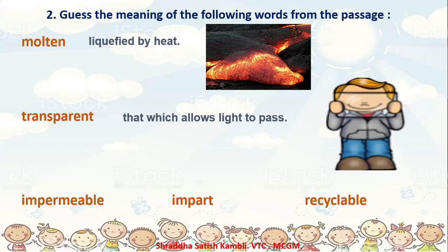So how will you find out the meaning of the other words? Pick up a dictionary and try to find out the meaning of these words. The words are: impermeable, impart, and recyclable. Let us see whether you are able to find out their meanings from the dictionary.